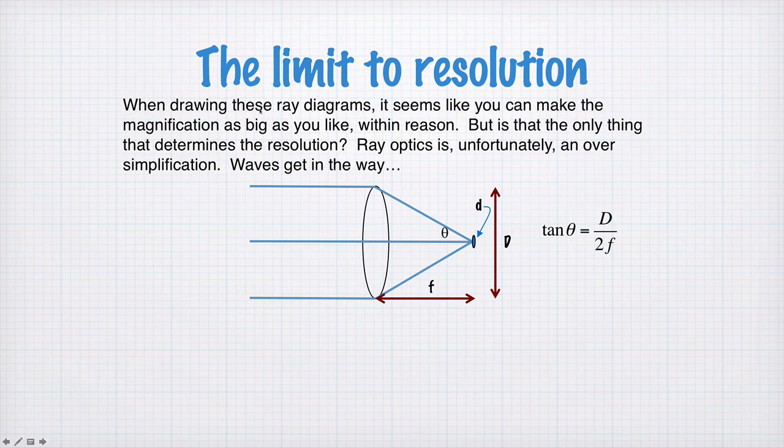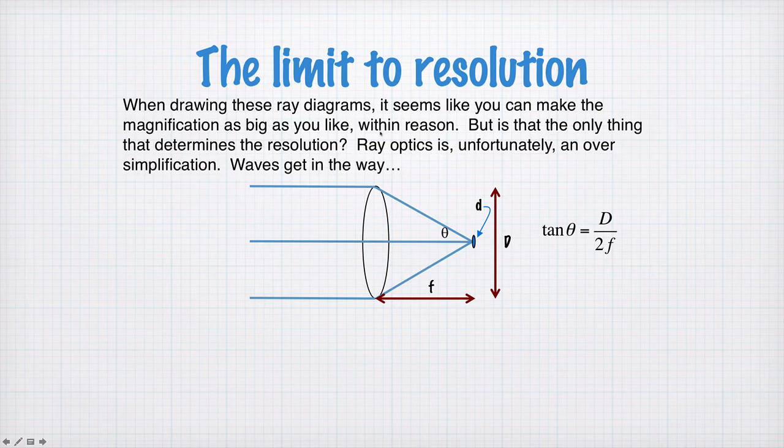So up until now, when drawing these ray diagrams, it seems you can make the magnification as big as you like within reason. You don't want to make a lens which is a kilometre across. But is that the only thing that determines the resolution?